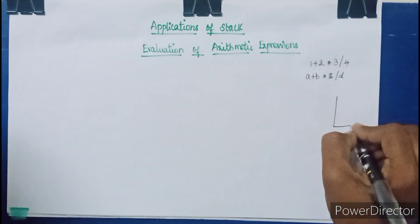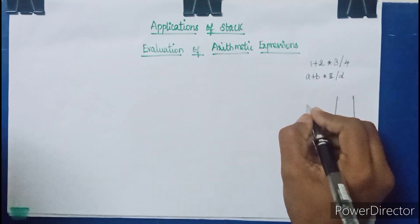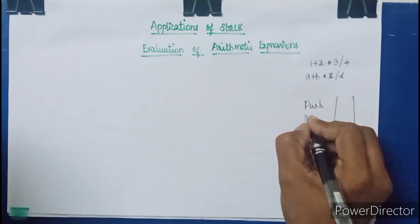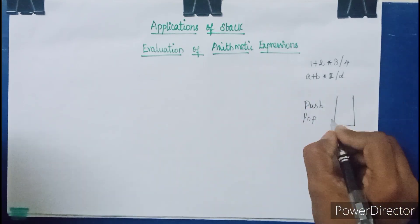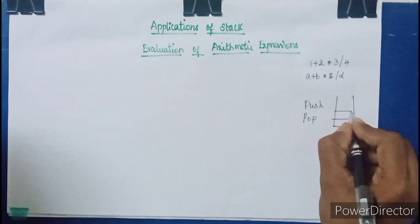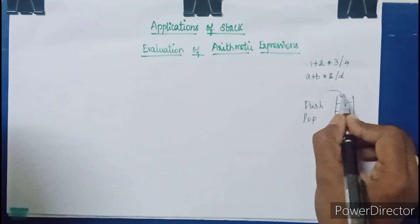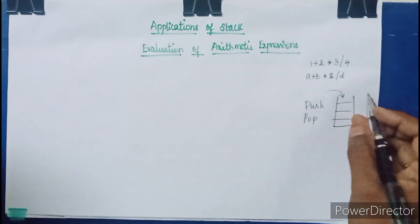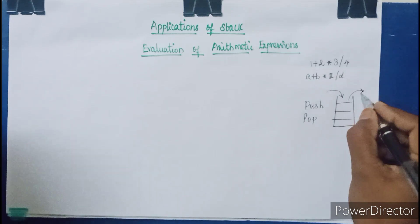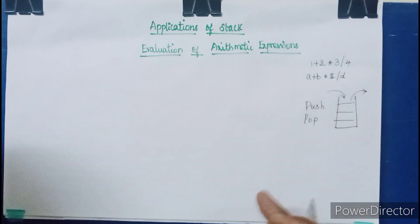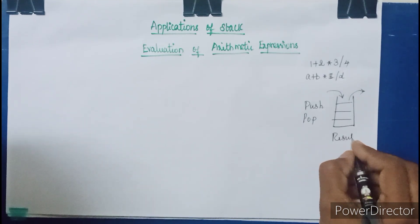We are going to use a stack. The stack has two operations: PUSH and POP. With the help of these two operations and the stack space, we are going to push operands and operators inside it and pop them out. Performing these two operations alternately, we can produce the result of the given expression.